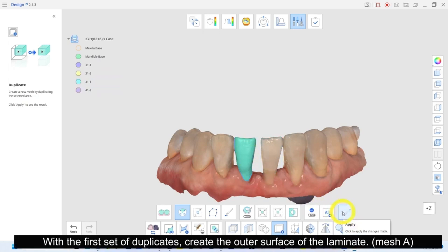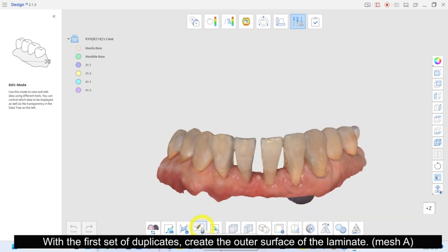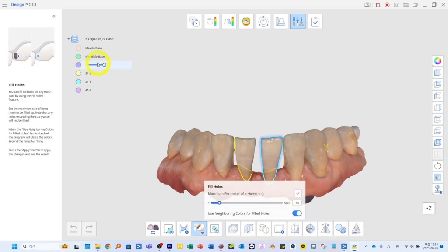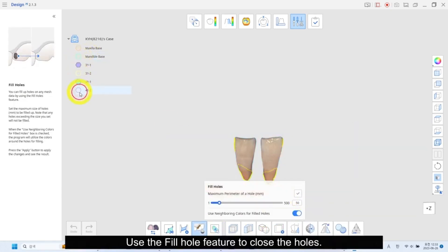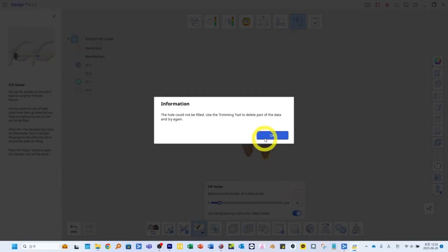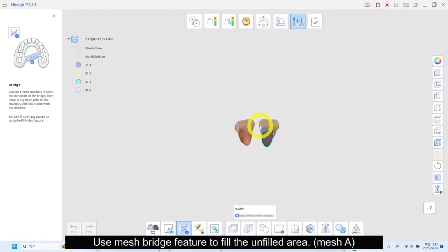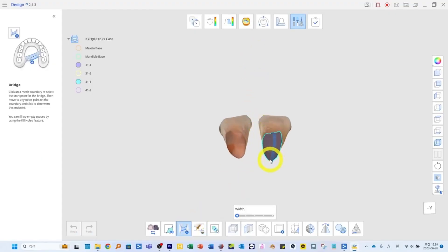With the first set of duplicates, create the outer surface of the laminate. Use the fill holes feature to close the holes. Use mesh bridge feature to fill the unfilled area.